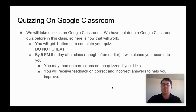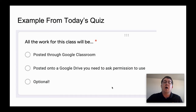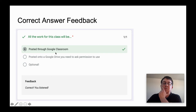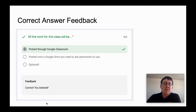So just an example from today's quiz: one question you'll see is 'all of this work for this class will be...' with three options. It's probably not optional since I'm taking attendance that way, and I didn't mention anything about Google Drive and asking permission, so it's going to be 'posted on Google Classroom.' When you get your feedback and scores released, you will see the correct answer if you got it right, along with some feedback like 'Correct — you listened, you watched the video.'